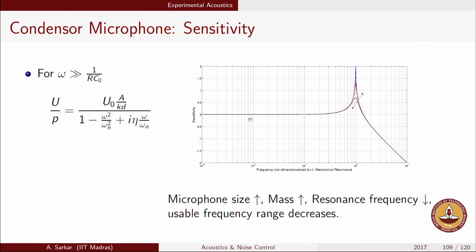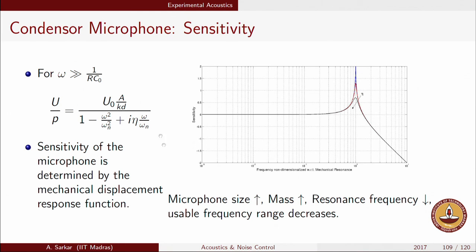In the next class we will see how the electrical folding frequency 1/(RC₀) provides a lower limit on the flat sensitivity range — today we took that as an assumption. As microphone size increases, mass increases, resonance frequency decreases, and the usable frequency range decreases. The operating frequency should stay well below the mechanical resonance frequency of the diaphragm for a flat, accurate sensitivity response.